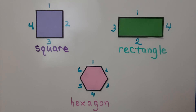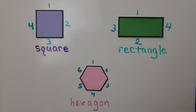So in this chapter, we're going to learn about a circle, a triangle, a square, a rectangle, and a hexagon. We're also going to learn about lines and sides.